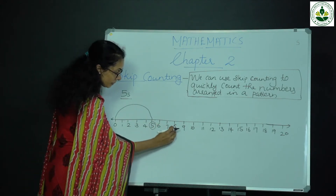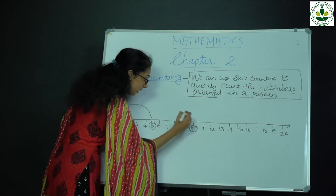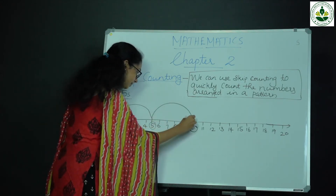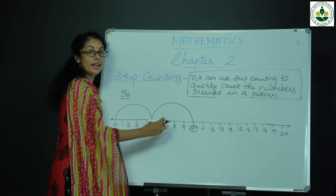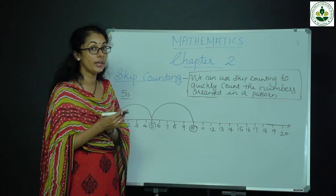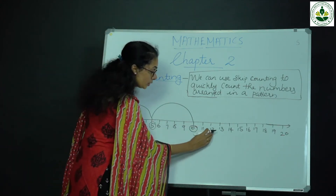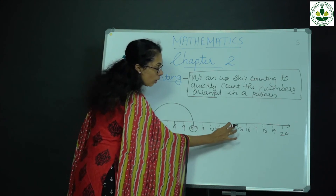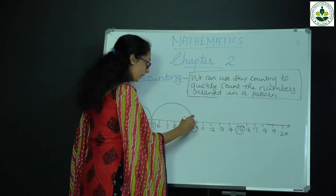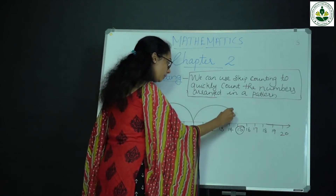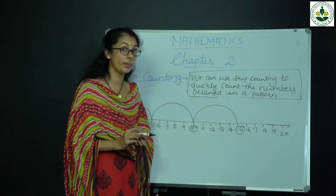Again 5 times: 1, 2, 3, 4, 5 — number 10. Then count again 5 times: 1, 2, 3, 4, 5 — number 15. So 10 to 15.